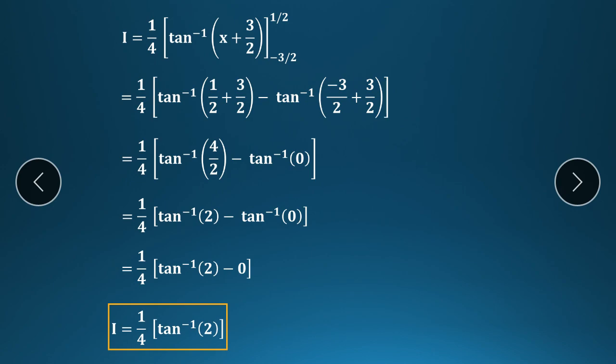After simplifying, choose the correct formula based on the form of the denominator, then substitute the upper and lower limits to get the answer. Now let's look at the next example.